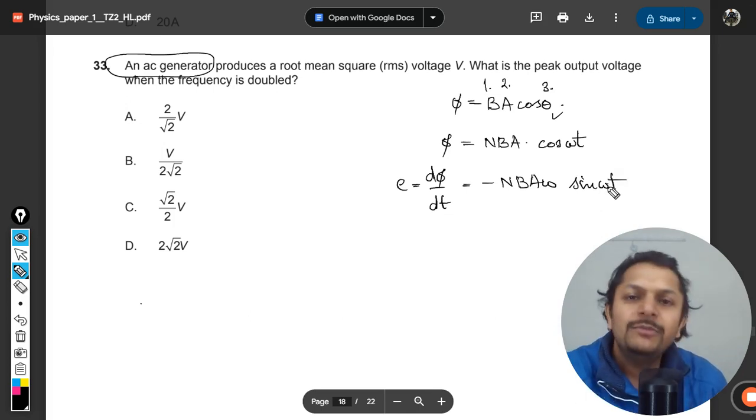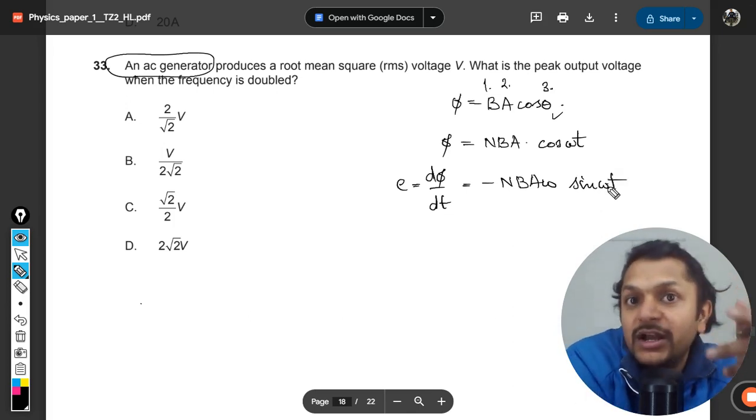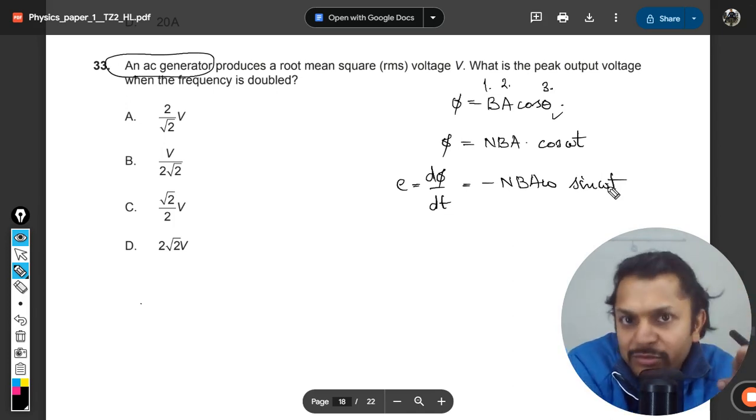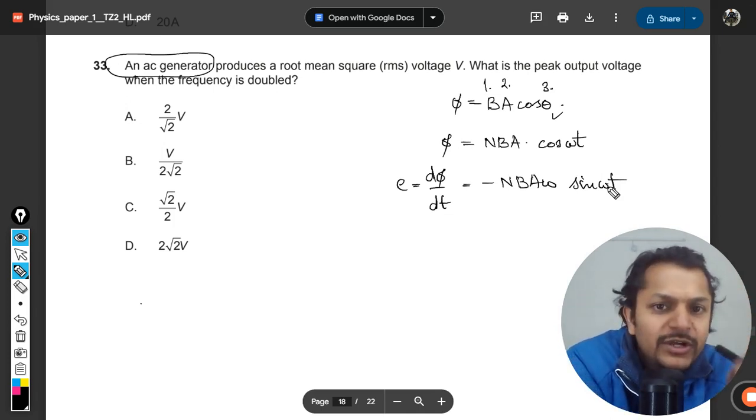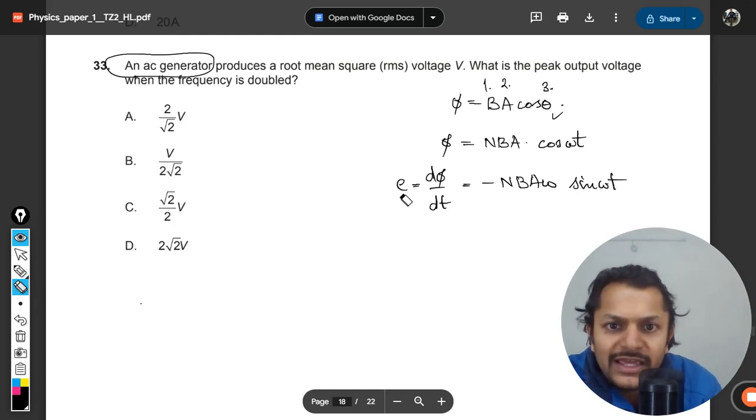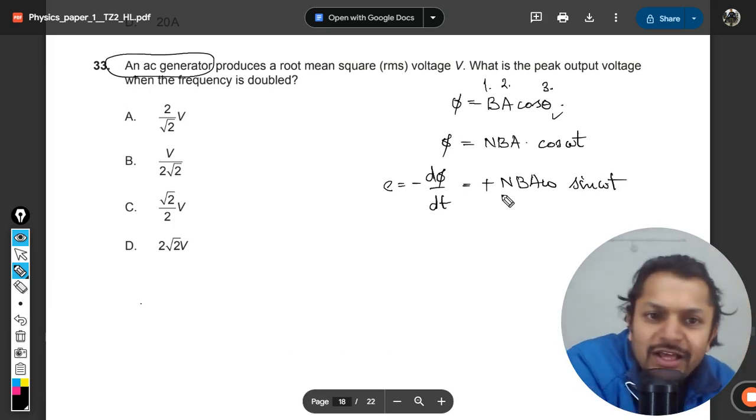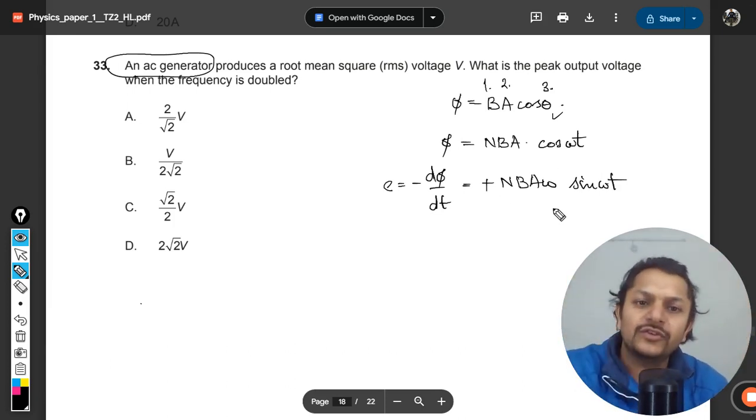Sine ωt, because θ is dependent on time, that is why I have written it as ωt. When you differentiate it, it becomes this. Now EMF is defined as negative dφ/dt, so thereby it is positive. So this is our final answer.